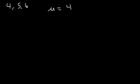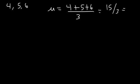Now let's calculate the standard deviation for the other set of numbers: 4, 5, and 6. Let's calculate the population mean — it's 4 plus 5 plus 6 divided by 3. 4 plus 6 is 10, plus 5 is 15, and 15 divided by 3 is 5. So the mean is again 5. Any time the numbers are evenly spread apart, the mean is going to be the middle number.